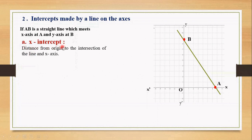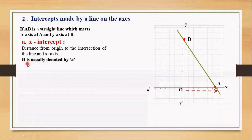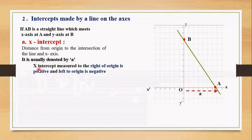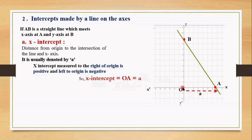Now let's define x-intercept. Consider the distance from the origin to the intersection of the line and x-axis. The distance from origin to the intersecting point with the x-axis — from O to A — is usually denoted by a. The distance from origin to the point of intersection with x-axis is the x-intercept. x-intercept measured to the right of the origin is positive and to the left is negative. Here in the figure x-intercept is OA which equals a.